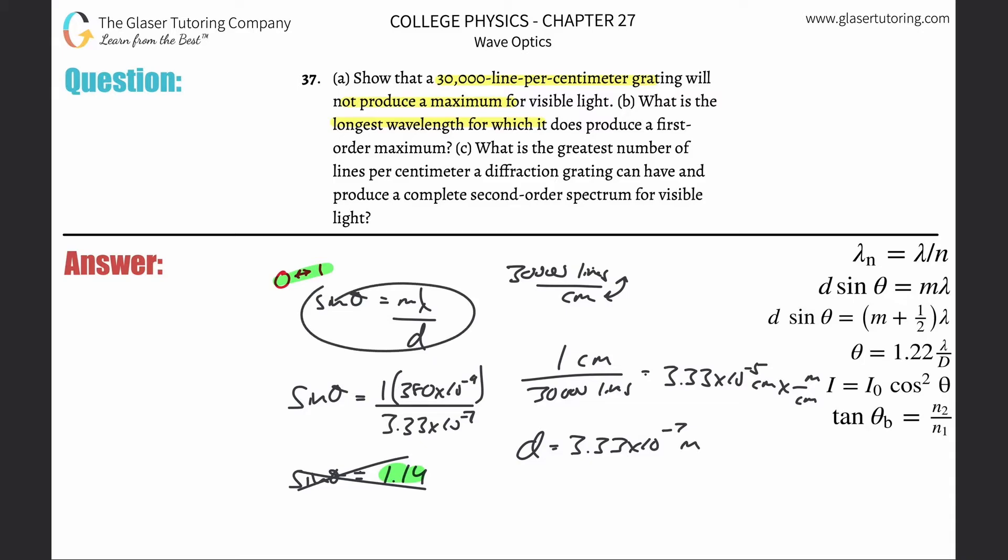So all I'm going to do now here is take this equation. Plug 1 in for sine of theta. M is 1. Wavelength is what we're looking for. And our d value was the 3.33 times 10 to the minus 7th. And wait a minute. When we solve this for lambda now, what do we get? It's the same thing as the d. Right? That's the longest wavelength. So that's b.